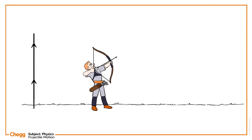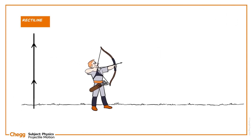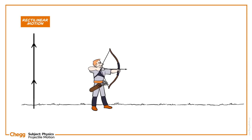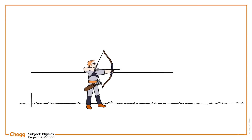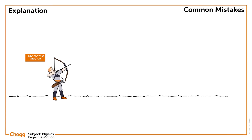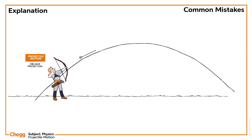Vertical projection is a rectilinear motion, whereas horizontal projection and oblique projection are considered as projectile motion. Let's discuss the projectile motion of an oblique projectile.